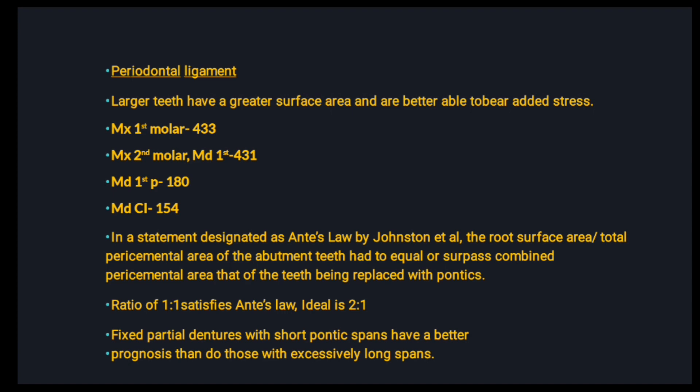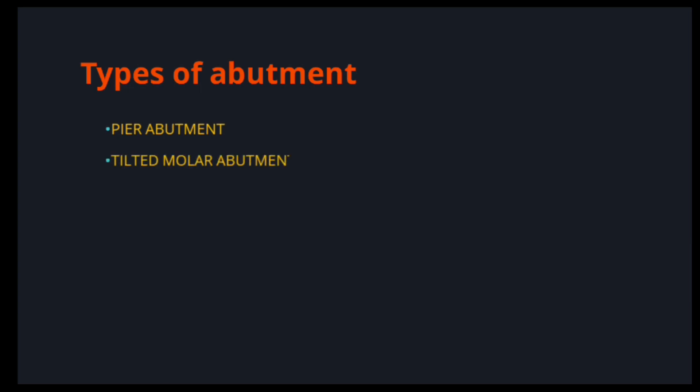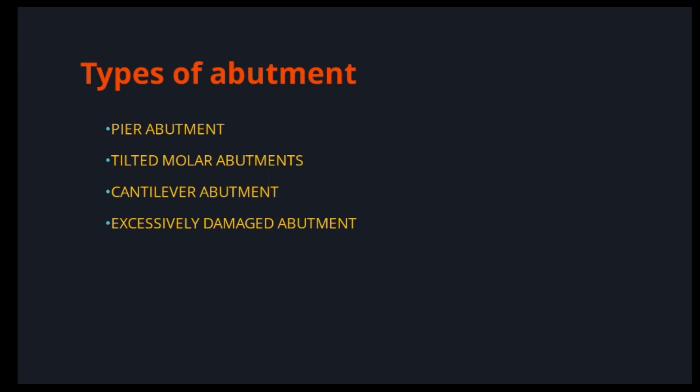Coming to the different types of abutments — this is important. You have your normal abutment, which is your ideal abutment: a non-carious, ideally anatomically located tooth. Other abutments include the pier abutment, the tilted molar abutment, the cantilever abutment, and the excessive damage abutment.